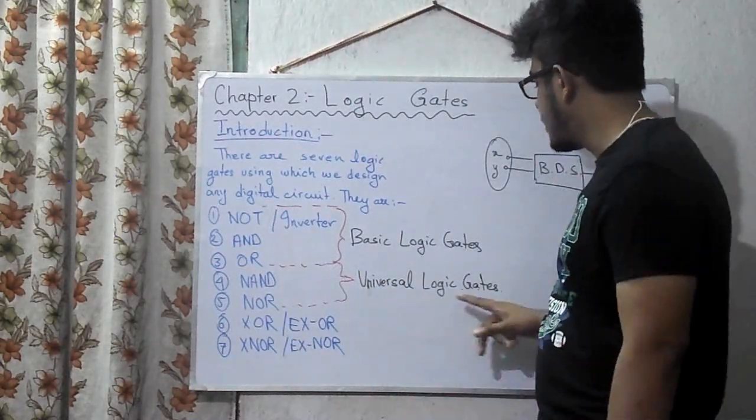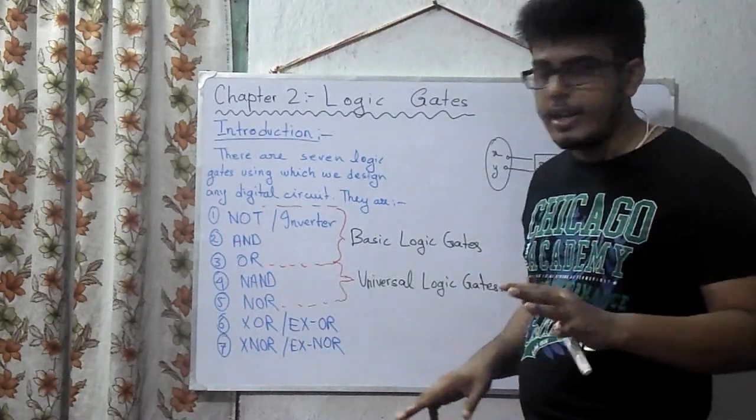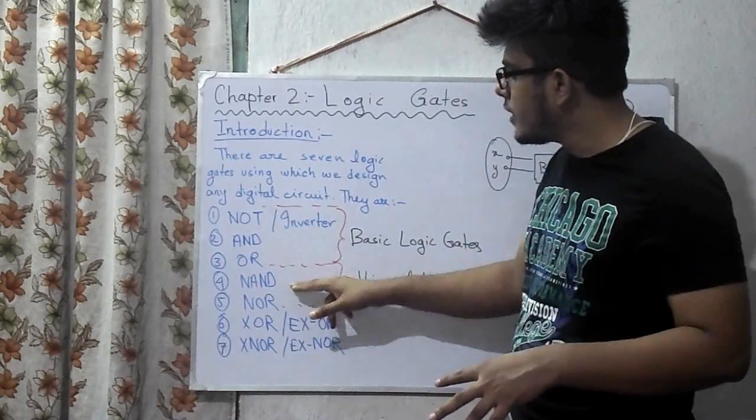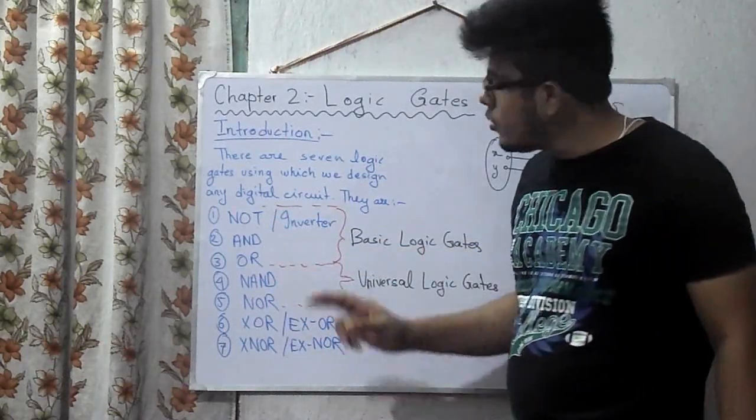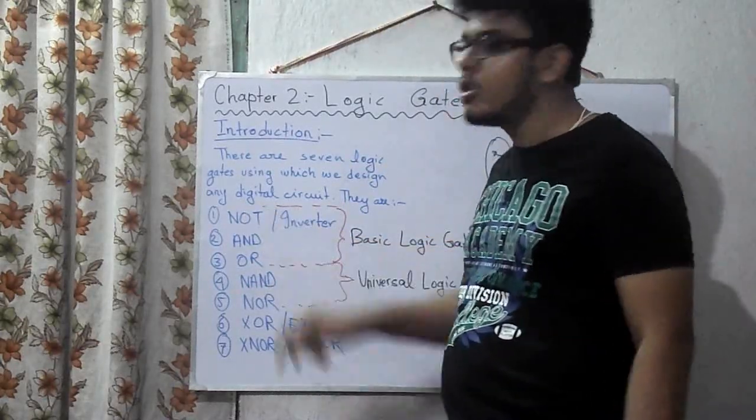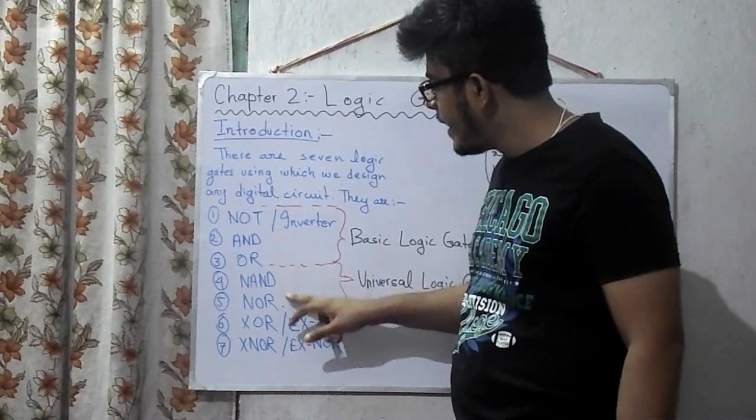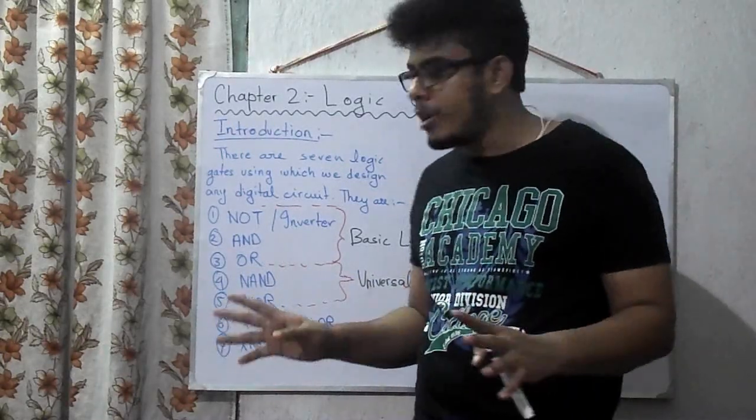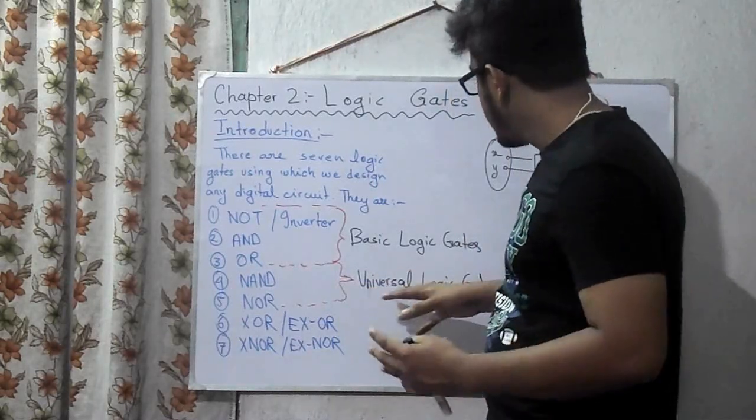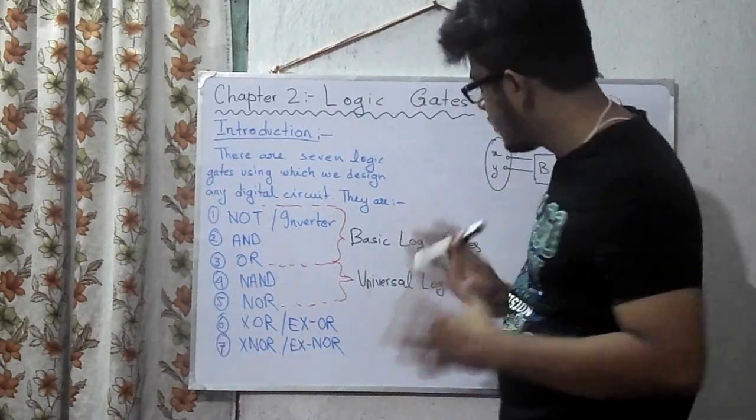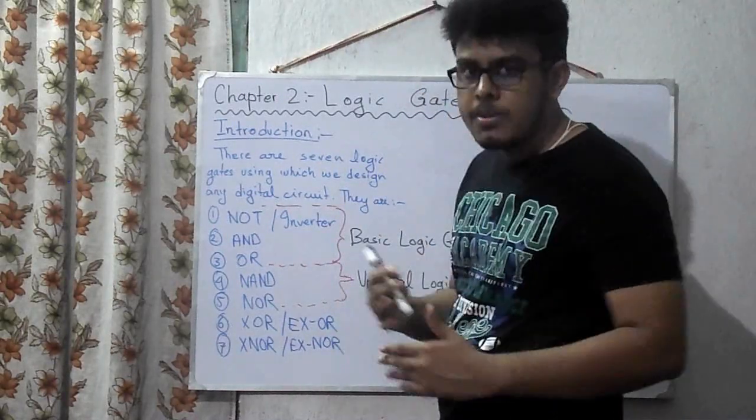You can design other gates using NAND and NOR, but the point is you cannot design AND gate using NOT gate. But in this case you can design NAND gate using NOR gate, NOR gate using any kind of combination. It can be designed using the universal logic gates.